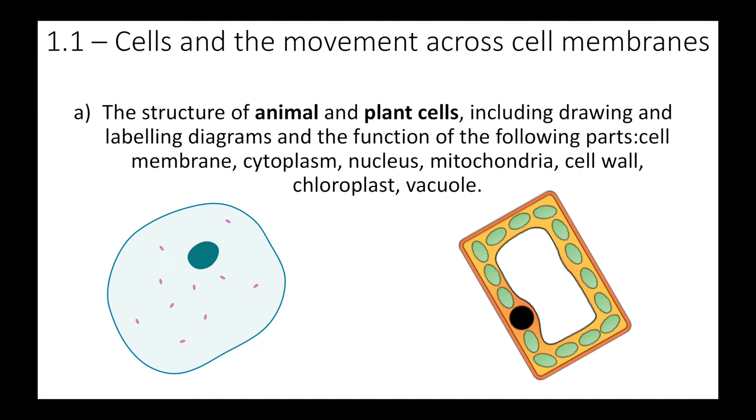Hi guys, so this is Miss Clark Does Science and today we're going to be revising the first unit of biology as part of the WJEC science specification, which is called cells and the movement across cell membranes. The first part of this unit focuses around the structure of animal and plant cells and their functions, which is what we're going to go through today.